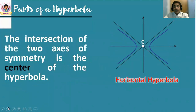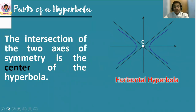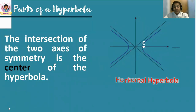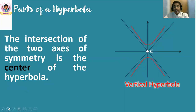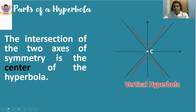The intersection of the two axes of symmetry is called the center of the hyperbola. Observe that point. In a vertical hyperbola, the center is here. Now, what are these two axes of symmetry?